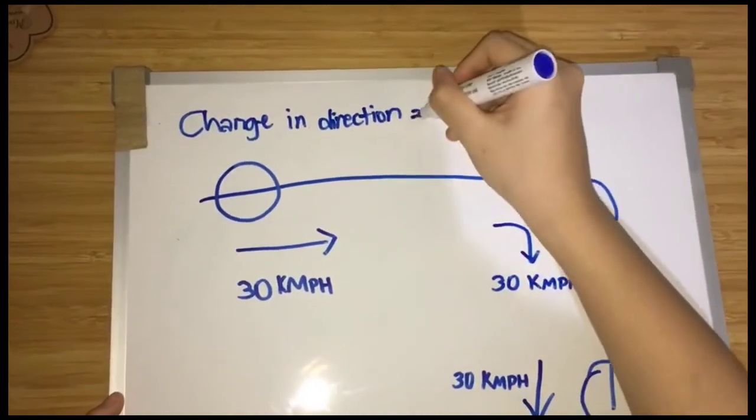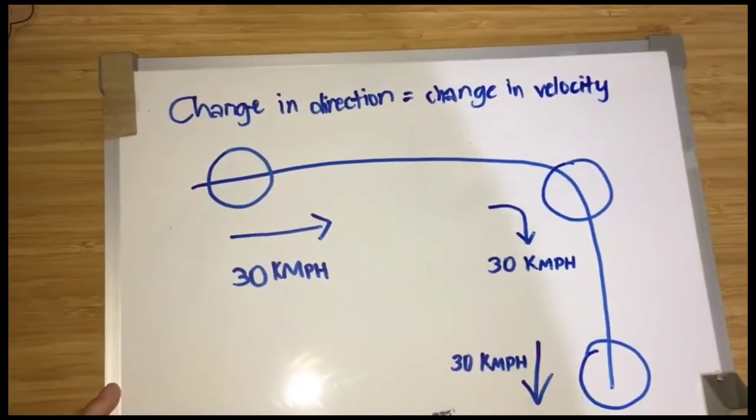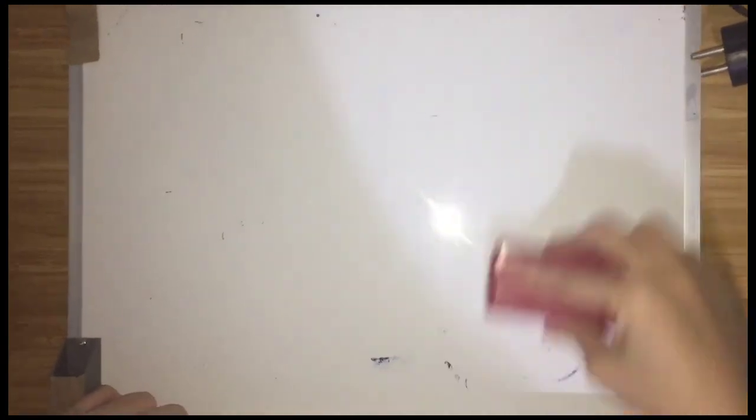Change in direction means there is a change in velocity as well. Even though the speed, which is 30 km per hour, is constant, the velocity and direction change.